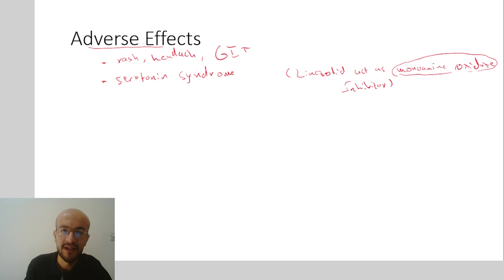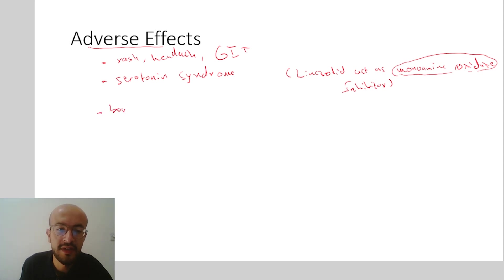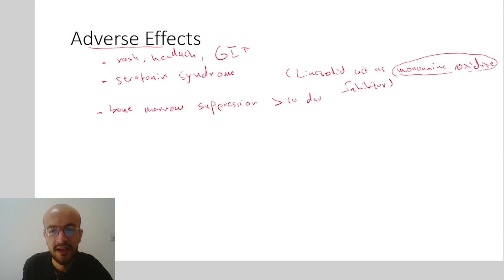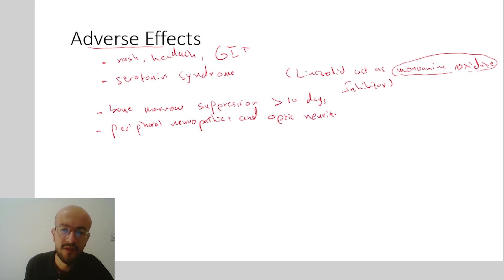Serotonin syndrome is characterized by symptoms including agitation, decreased blood pressure, dilated pupils, tachycardia, tachypnea, and insomnia, and it can become very dangerous. Linezolid may also lead to bone marrow suppression if used for more than 10 days, and peripheral neuropathies and optic neuritis if used for more than 28 days.